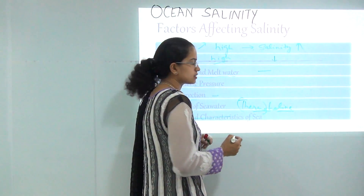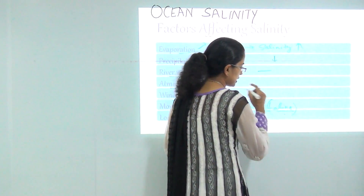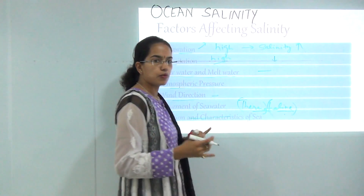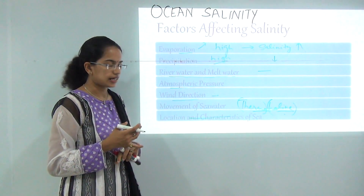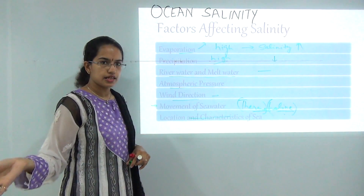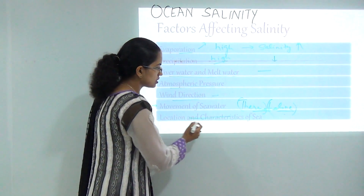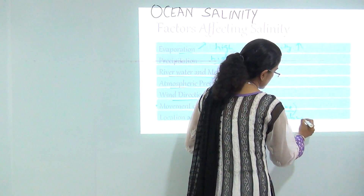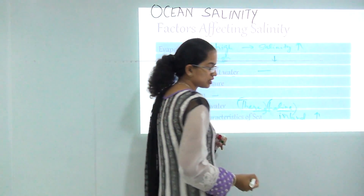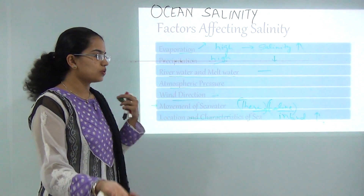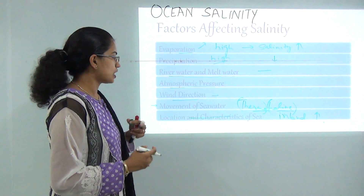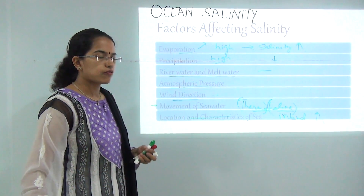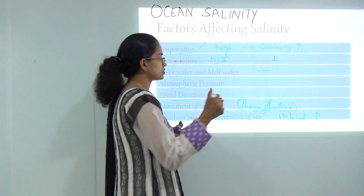The word 'thermo' here means temperature and 'haline' refers to salinity. So these circulations are governed by both temperature and salinity, and we will be studying this topic in detail. Then you have the location and characteristics of the sea — if the sea is a kind of inland sea, the salinity would increase because it is an enclosed sea with no outlet or inflow of waters, which leads to an increase in salinity. In the previous class on ocean temperature we talked about the concept known as brine rejection.